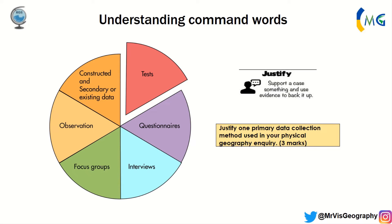For example, justifying a questionnaire for a physical geography inquiry — it's unlikely to be useful because you're measuring rivers. So it's more likely you'd pick a test. You'd say a test is more suited because physical geography requires measuring physical processes and landscapes, and it allows you to get accurate measurements. To justify means: tell me what collection method you used, why you used it, and how it was appropriate. That gives you a mark for naming the test, a mark for what it is, and a mark for why it's useful.